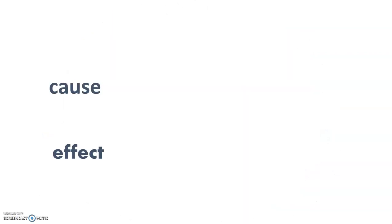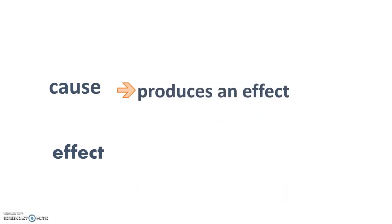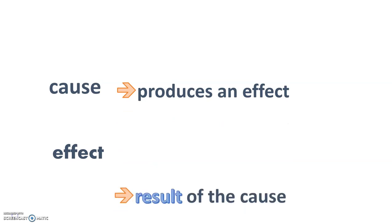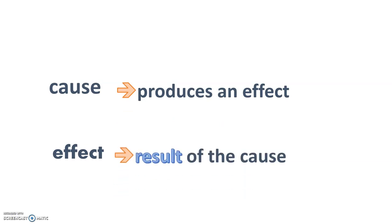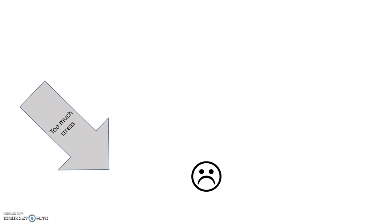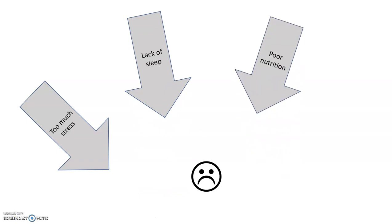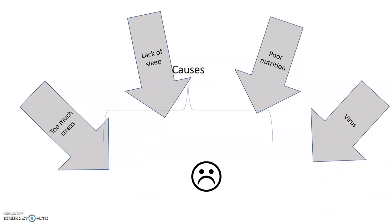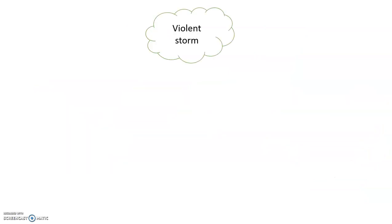A cause is a factor that produces an effect, while an effect is a result of the cause. Many things usually have more than one cause. For example, a person may become ill because of too much stress, lack of sleep, poor nutrition, or exposure to a virus. Similarly, many things can have more than one effect.